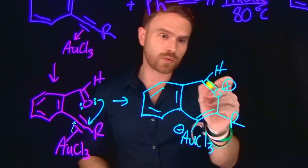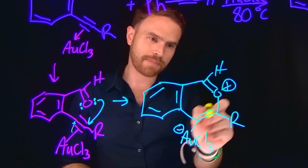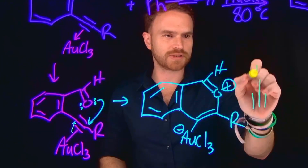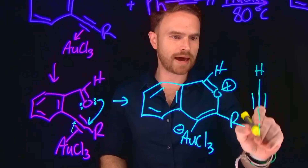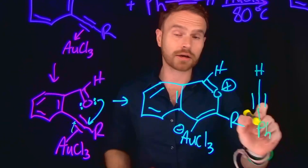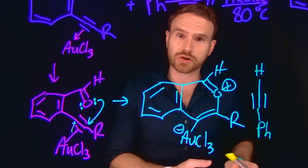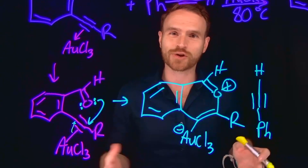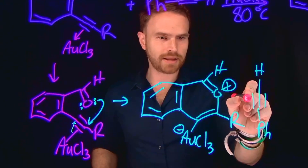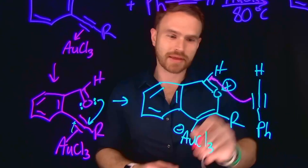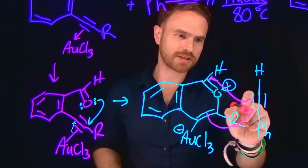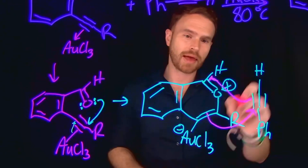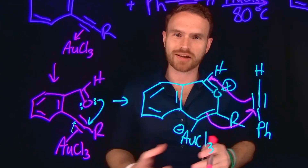If you notice, we have a pi bond here and a pi bond here. And if we introduce our alkyne at this position, notice then we have the makings of what looks like could be a 4+2 cycloaddition, or what you may have previously heard of as a Diels-Alder reaction. So these pi electrons will come to this carbon, these pi electrons will come to this carbon, and that's going to make another fused ring system as a product of this 4+2 cycloaddition.